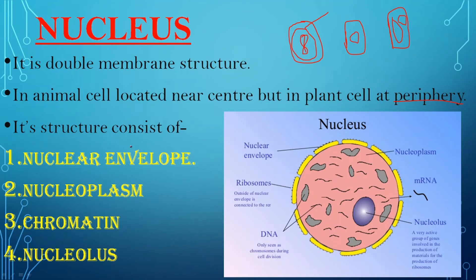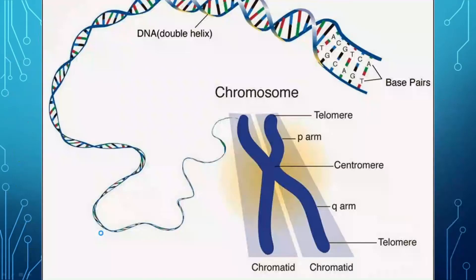Now coming to the structure of nucleus. The structure of nucleus consists of: a membrane system called the nuclear envelope, a fluid present inside the nucleus called nucleoplasm, a thread-like structure inside the nucleus called chromatin, and a round oval structure called the nucleolus.